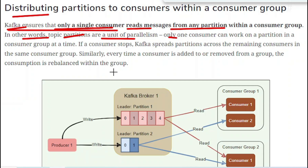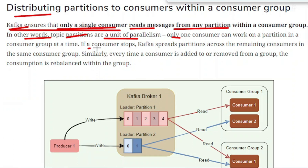Consumer one is working on partition one, so at this point consumer two in the same group is not allowed to read the messages of partition one, because consumer one is already reading them. If a consumer stops, Kafka spreads the partitions across the remaining consumers in the same consumer group. If consumer one stops, consumer two will start reading messages from partition one along with partition two. Similarly, every time a consumer is added to or removed from the group, the consumption is rebalanced within the group.